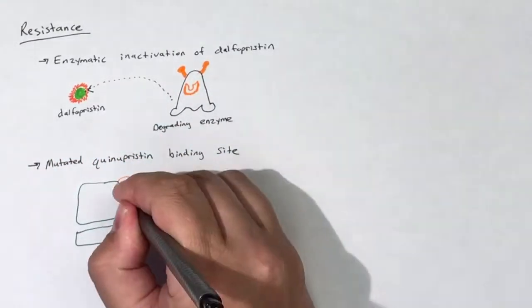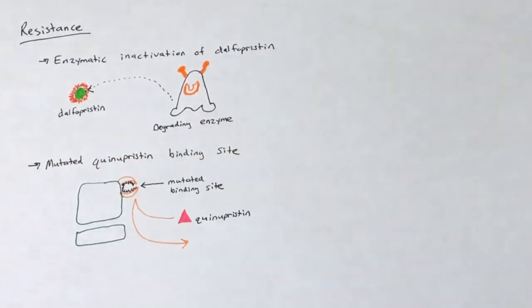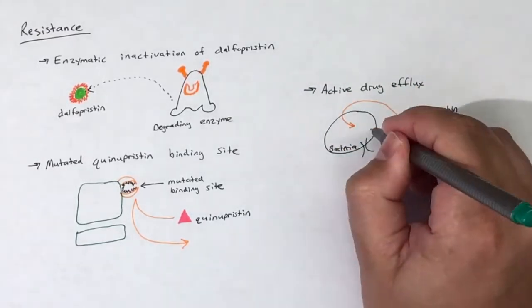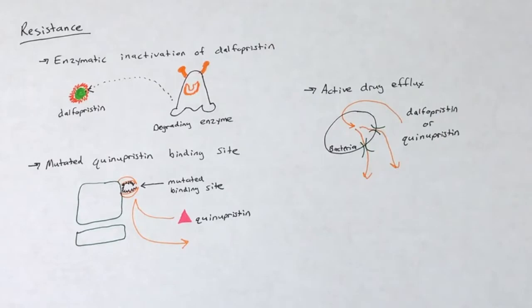Secondly, the binding site for Quinupristin can be altered, which reduces the antibacterial action of Quinupristin. Lastly, both Dalfopristin and Quinupristin can be subject to active drug efflux.